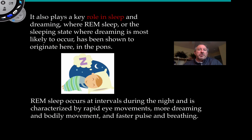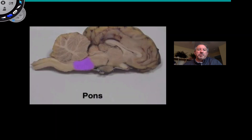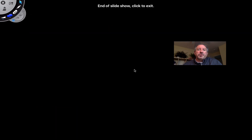So there you have it — part of the brainstem: the medulla oblongata and the pons, important structures of the brain. Thanks for watching.